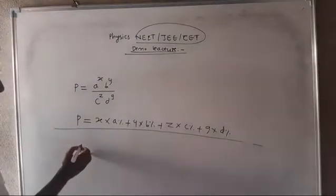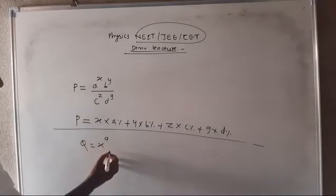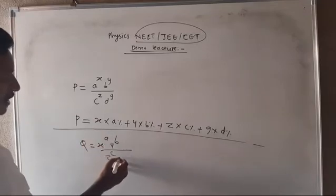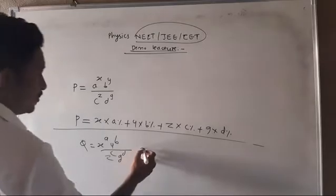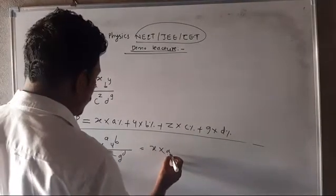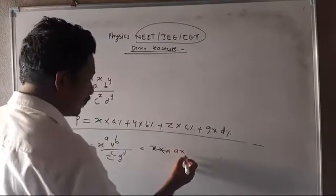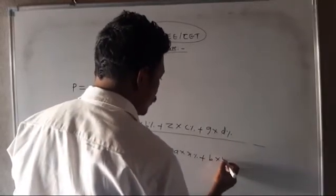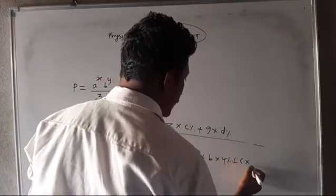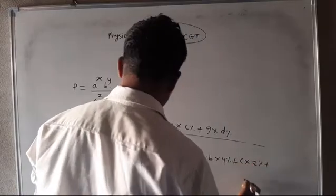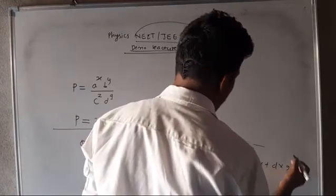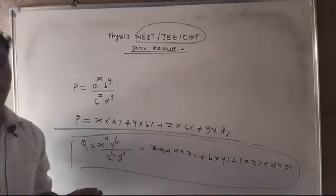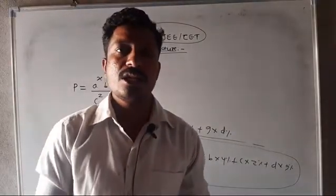Similarly, for a quantity Q with X raised to A, Y raised to B, Z raised to C, and G raised to D, we get: percentage error in Q equals A into percentage of X, plus B into percentage of Y, plus C into percentage of Z, plus D into percentage of G. We call this the formula. Let's do an example — direct NEET and CET level questions.